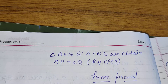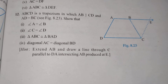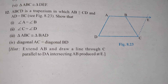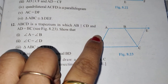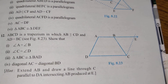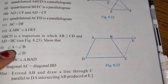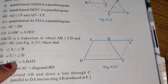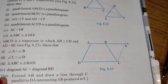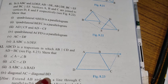Now we have to solve question number 12. ABCD is a trapezium in which AB is parallel to CD and AD is equal to BC. We have to show: angle A is equal to angle B; angle C is equal to angle D; triangle ABC is congruent to triangle BAD; and diagonal AC is equal to diagonal BD.